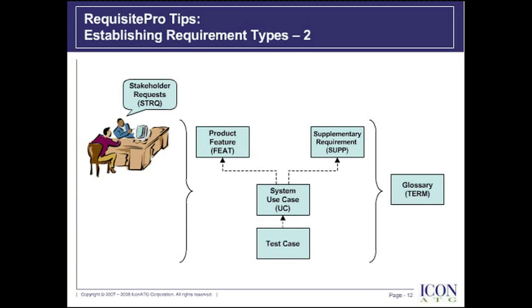On this slide, I've graphically depicted a variety of requirement types. The directed lines indicate dependencies between requirement types. Your Stakeholder Request should drive your product features and can also drive your supplementary, or SUP, requirements. SUP requirements can also manifest from standards like security, Sarbanes-Oxley, usability, and so on. Your product features will drive your system use cases, and system use cases can reference and adhere to SUP requirements. Your system use cases will drive your test cases. On the right side, you will see a glossary, which defines any terms pertinent to your project or organization.